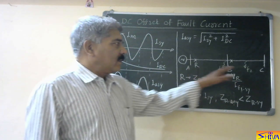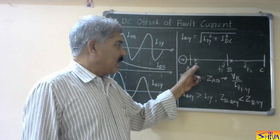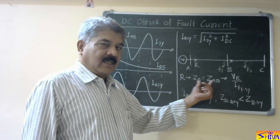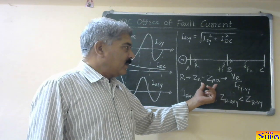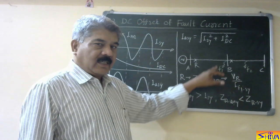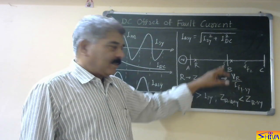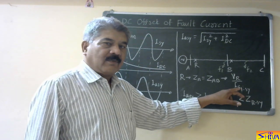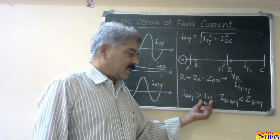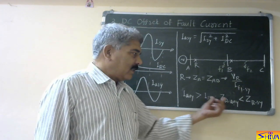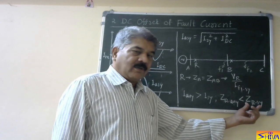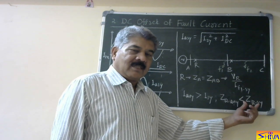Now let us consider this power system with two sections: AB and BC. Relay R is used to protect line section AB, so its reach — the impedance setting — is equal to Z_AB, which is Vr upon I_F1. It is set according to the fault current magnitude at the extreme end, and that fault current magnitude is the symmetrical fault current magnitude. Now when an asymmetrical fault current is present, it is greater than the symmetrical fault current. Therefore, the impedance measured by the relay due to asymmetrical fault current is less than that measured with symmetrical fault current.